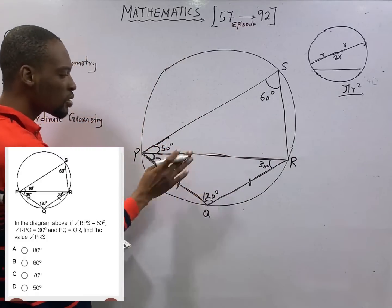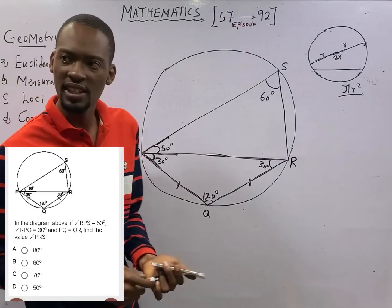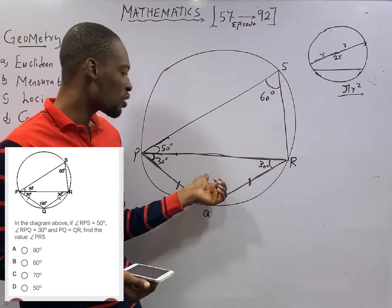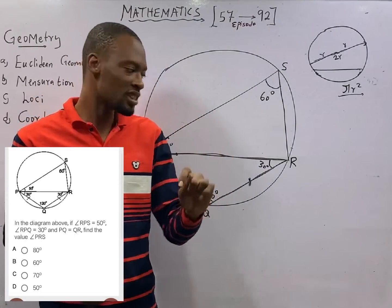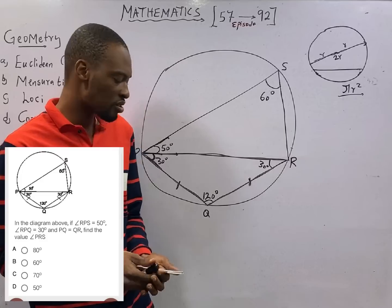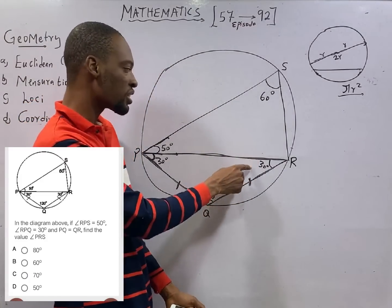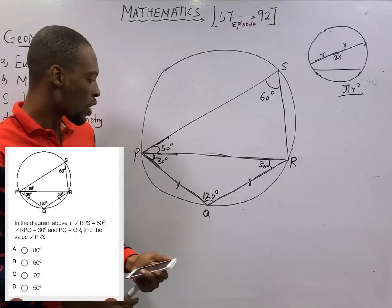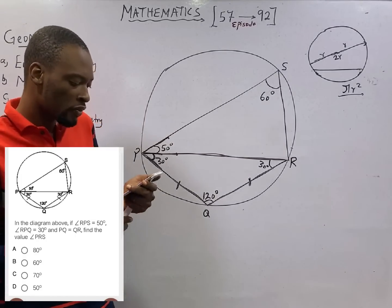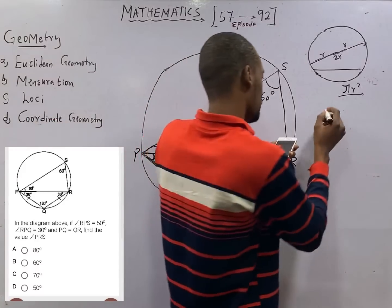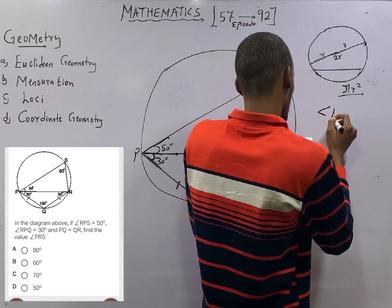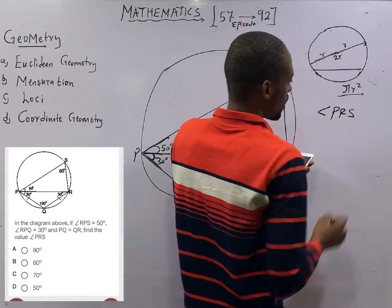Once you sum everything up, it will give you 180 degrees. Any time the angle in the triangle is more than 180 degrees, then your answer is wrong. That is why angle here must be 30, not more than 20 degrees. It will exceed 180 degrees.